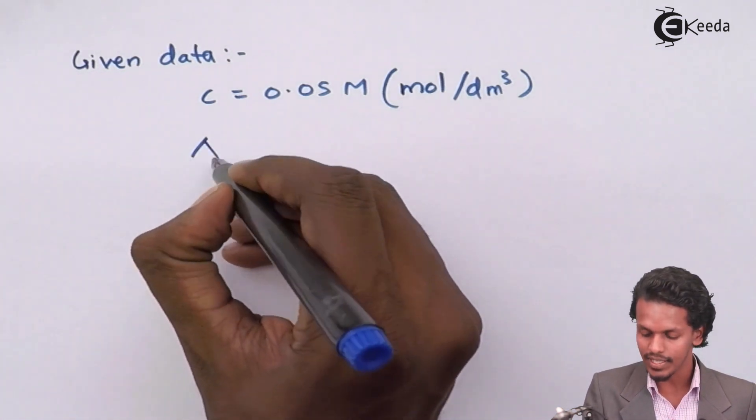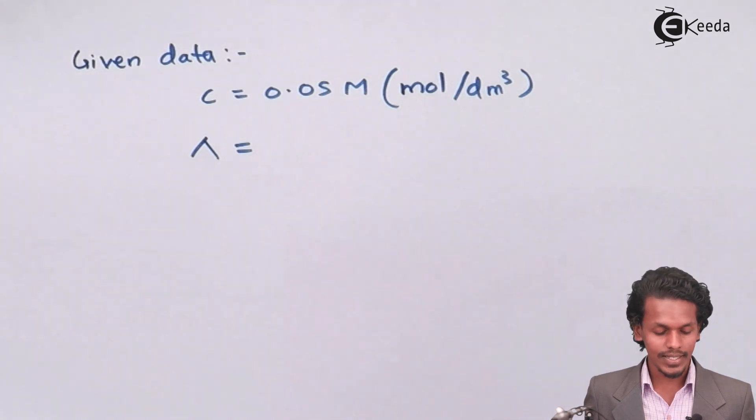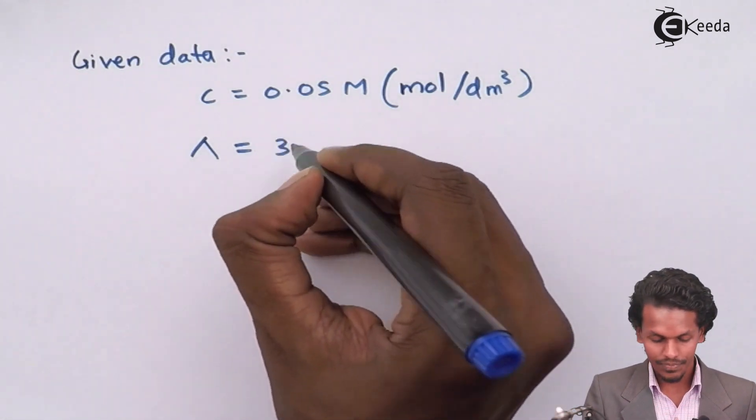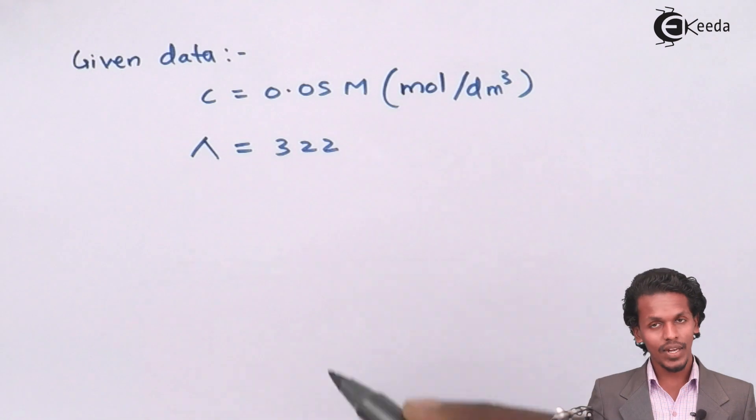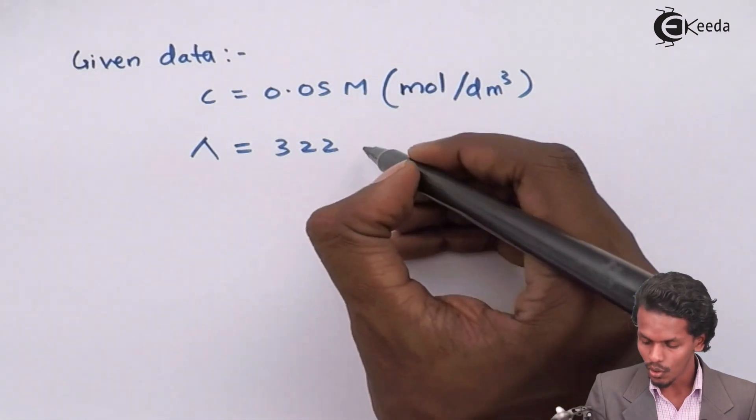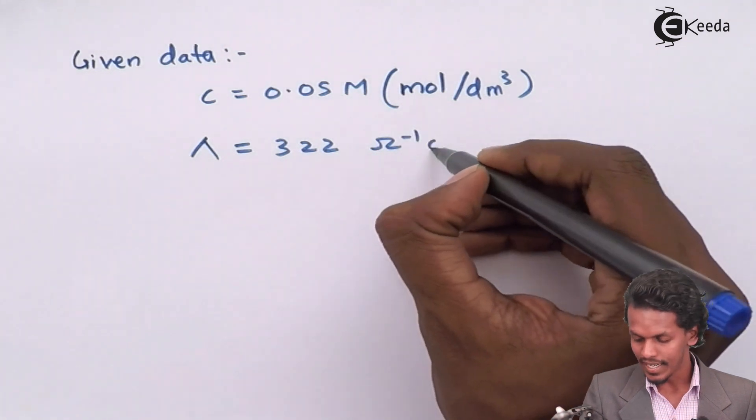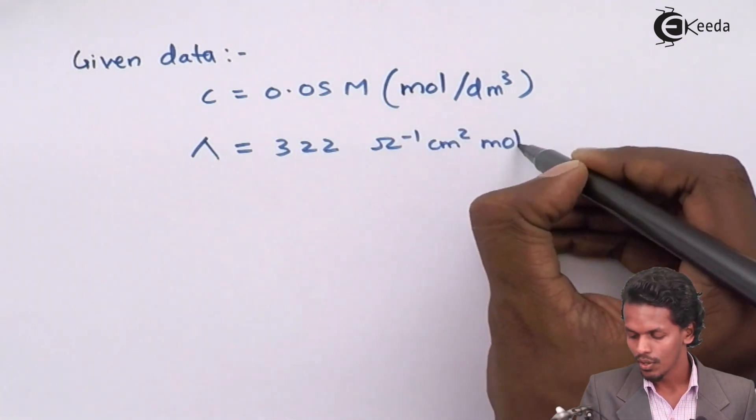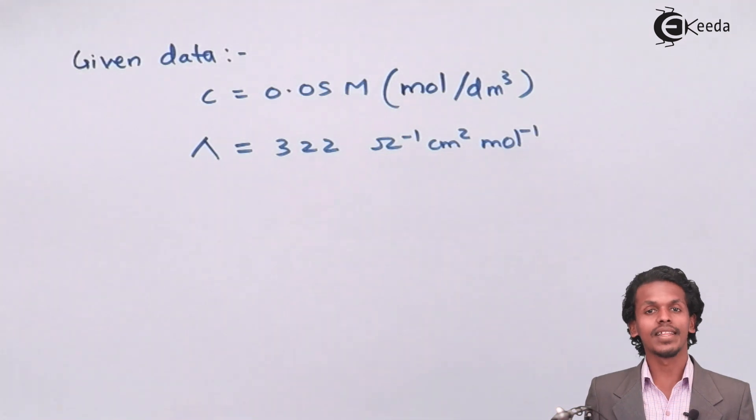That has a value of 322 with a unit of ohm inverse centimeter square per mole. We can write it this way, and because of this we can find the conductivity.